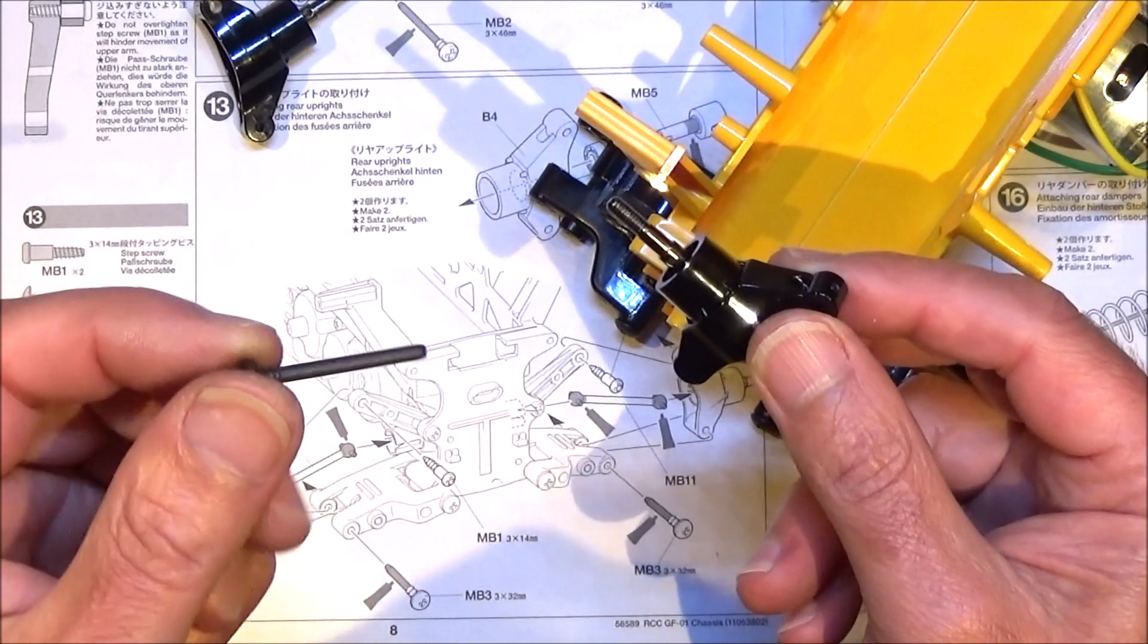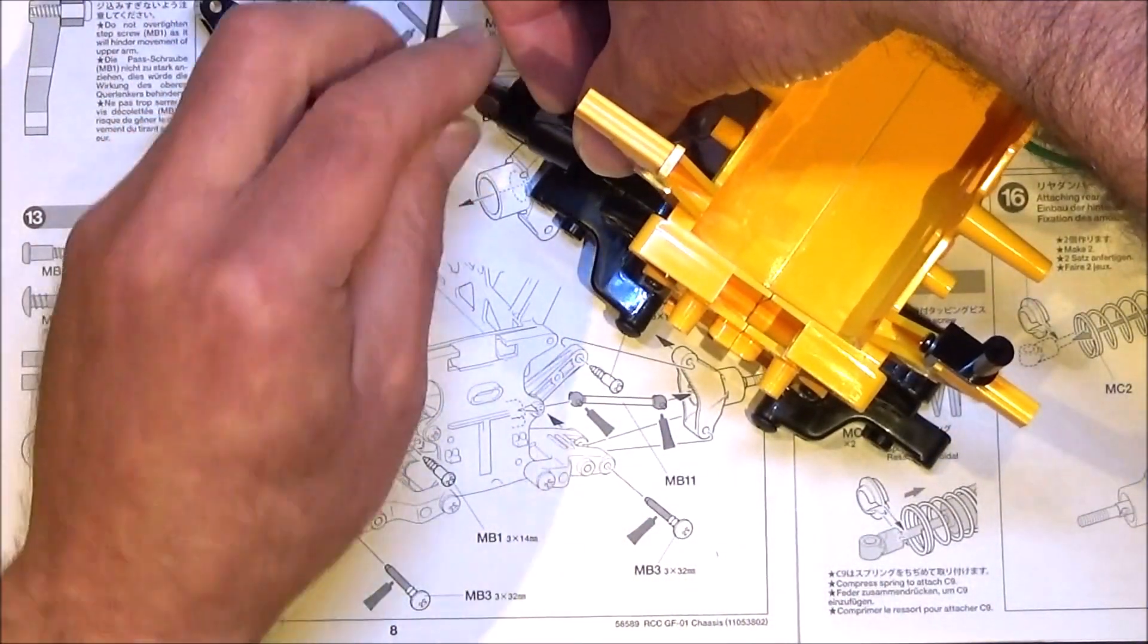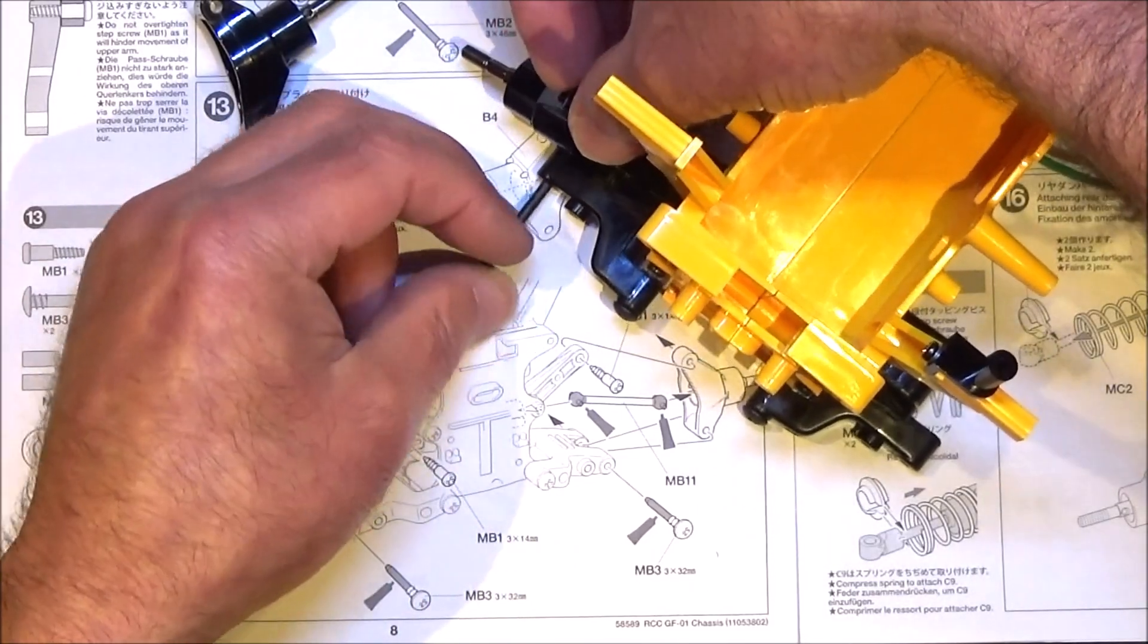Again that's a very tight fit for that bearing but like I say, it's a good thing. Next get your 32mm screw pin which is an MB3 and we're going to fit those uprights to the lower arms. Very simple.